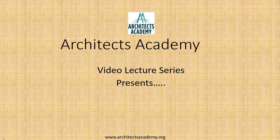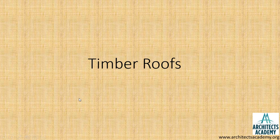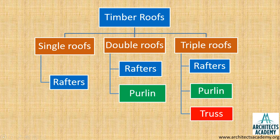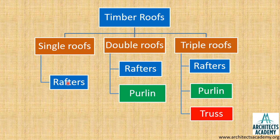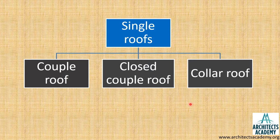Welcome to another video lecture from Architects Academy. Today we are going to learn about timber roofs. In timber roofs there are basically three categories: single roofs, double roofs, and triple roofs. These categories are based on the main structural members used. In single roofs, only one structural member is used — the rafter. In double roofs there are two members: the rafter and the purlin. In triple roofs there are rafters, purlins, and a truss.